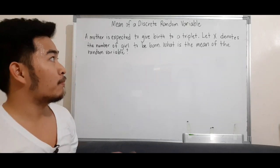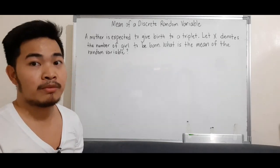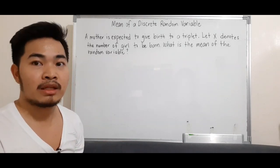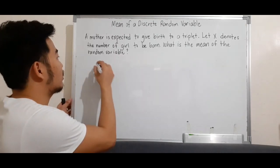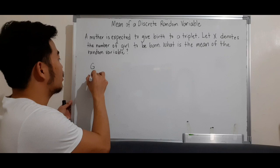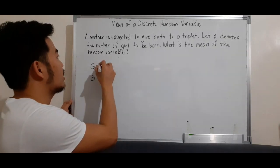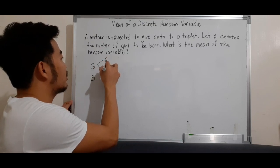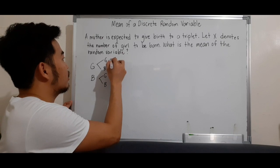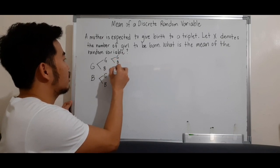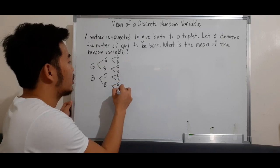Now, triplets will be born. So what are our expected outcomes? We'll create a tree diagram. We have girl and boy. This is their first baby. The second baby can be girl or boy. The third can be girl or boy. And we have girl, boy branches for each possibility.